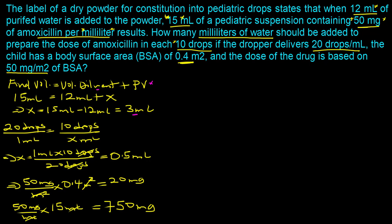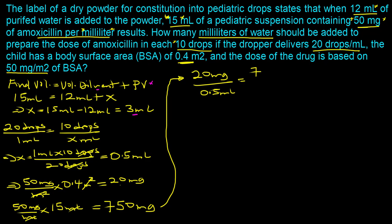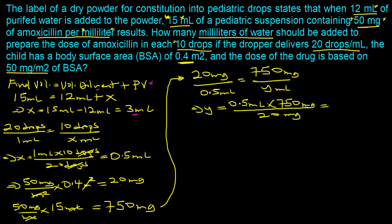We know the dose should be 20 milligrams in 0.5 milliliters — that's the desired concentration. Using a ratio: 20 mg / 0.5 mL = 750 mg / y. Solving for y: y = (0.5 mL × 750 mg) ÷ 20 mg = 18.75 milliliters. So 18.75 milliliters is the final volume under these conditions.